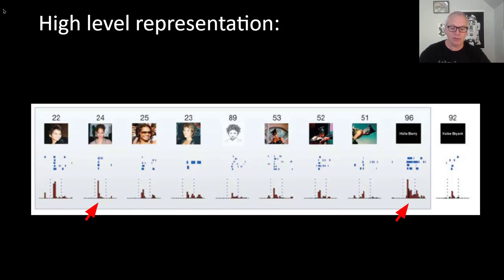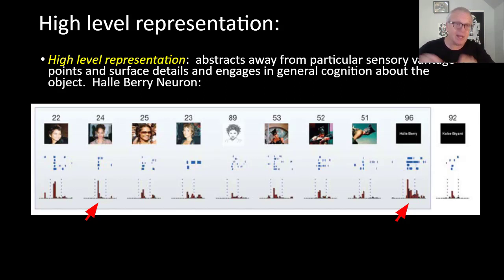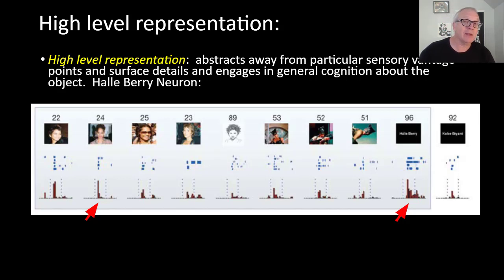Now let me expand on that. This is from a famous study that Christophe Koch and a few other important neuroscientists were engaged in. What they found was — this was an epilepsy patient who had little metal detectors embedded down into her brain. They were trying to detect and figure out where the epileptic attacks were originating. But one of the things they did while monitoring this patient and some others was show her a big battery of different pictures and map where some neural activity was happening. And what they found was famously the Halle Berry neuron.